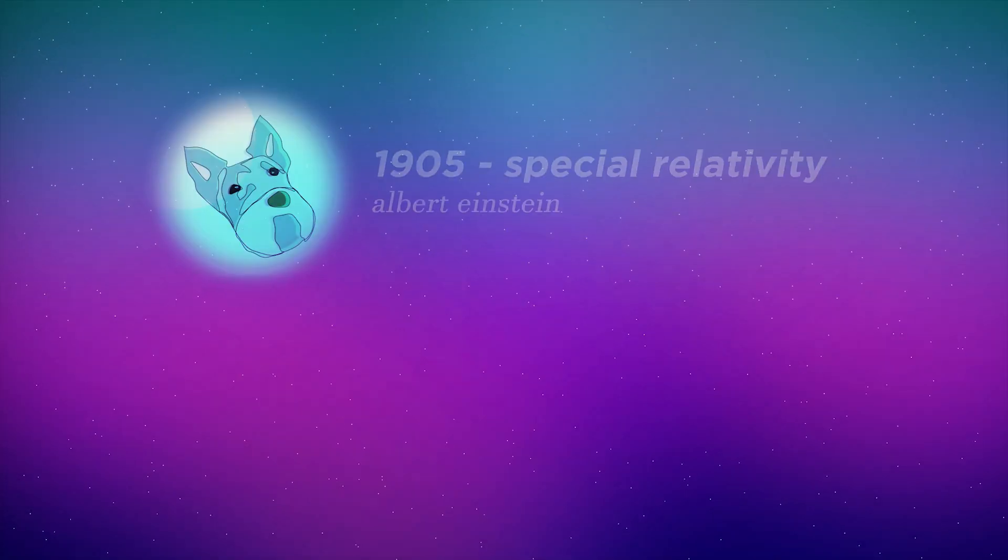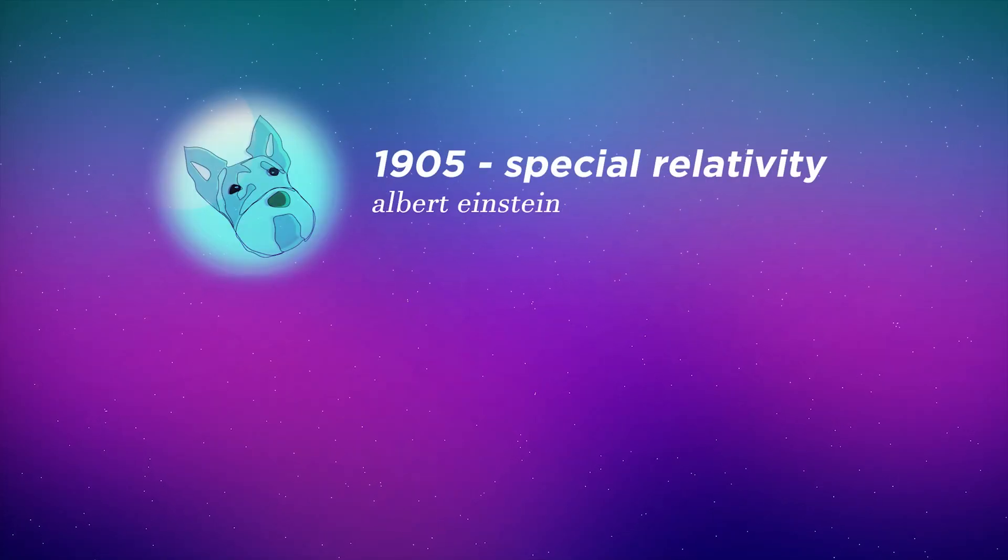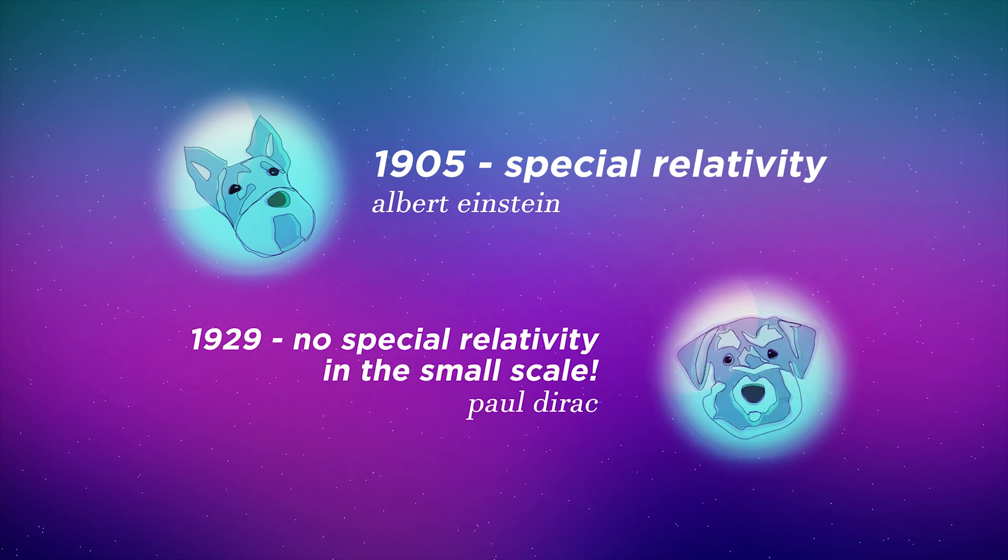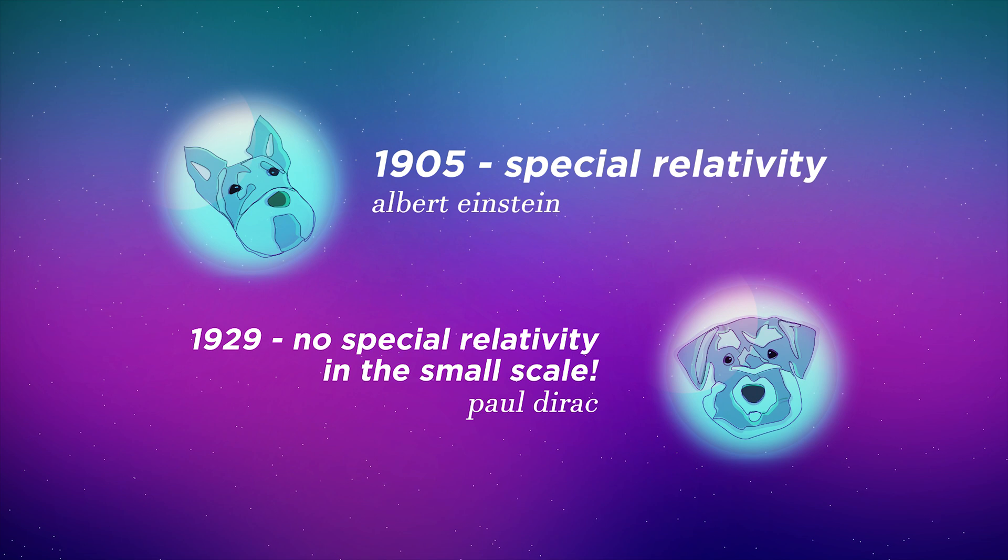But how scientists got there wasn't a smooth ride. Einstein's special relativity was published in 1905. In 1929, Dirac said in small-scale systems such as atoms and molecules, we don't need to care about relativity. It doesn't matter how fast these tiny things are moving. Not until 1935.